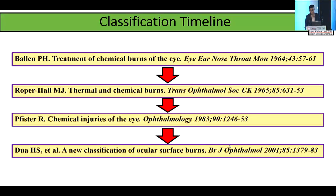Looking at the timeline of how classification has developed: Palin was the first individual to come out with a systematic classification for chemical burns. Roper Hall then modified this and came out with a new system in 1965. There was also a minor classification not commonly used. The currently accepted system is the Dua classification, which came out in 2001 — about 23 years ago — and since then we have not advanced much.